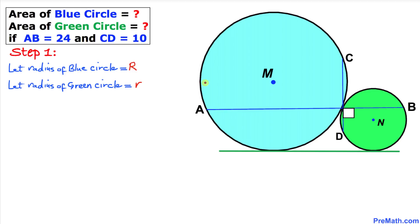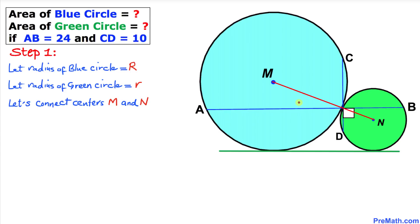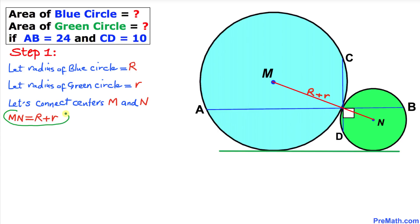Let the radius of the big blue circle be uppercase R and the radius of the smaller green circle be lowercase r. Now let's connect the centers M and N. This part is the radius of the bigger blue circle, uppercase R, and this is the radius of the smaller green circle, lowercase r. So the distance MN turns out to be uppercase R plus lowercase r.